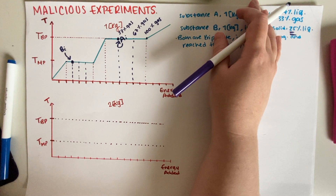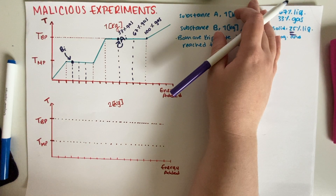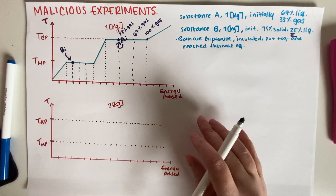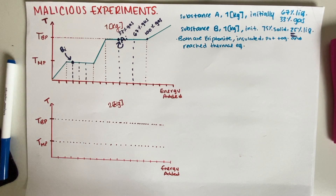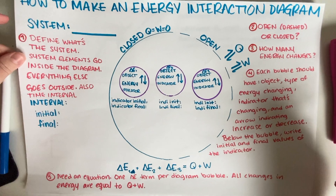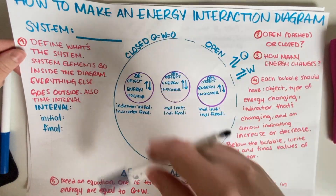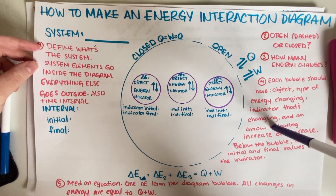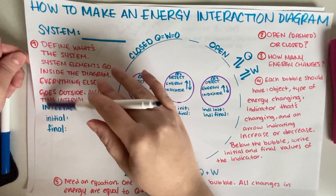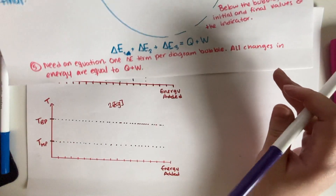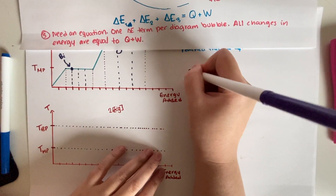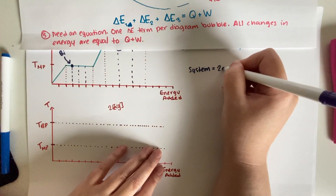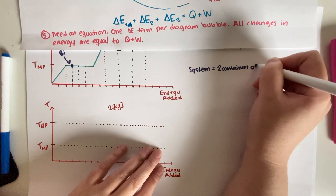Part B asks us to draw an energy interaction diagram representing the change of the system from when the quantities are combined to when they reach equilibrium. I have a helping aid from reading through the 7A book on how to draw energy interaction diagrams, to make sure I get them complete and don't miss anything. The first step is to define what the system is.